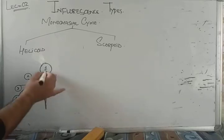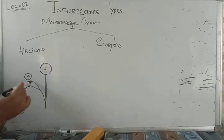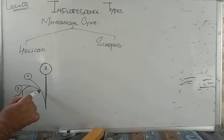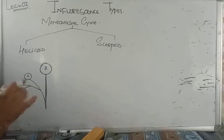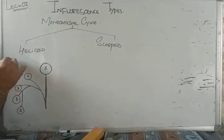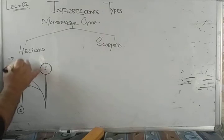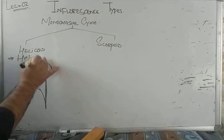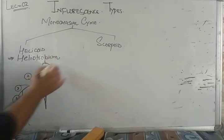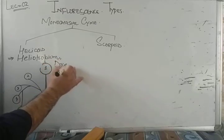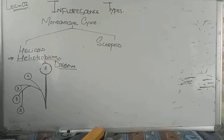In helicoid, the main axis terminates into a flower, the lateral branch ends, and the second flower is on the same side. That means flowers are born on the same side — lateral branches are formed on the same side of the peduncle. This type of inflorescence is called helicoid, which is a type of monochasial cyme. Helicoid inflorescence is present in Heliotropium and also in Drosera.